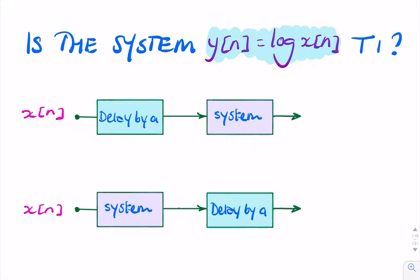So that means, if we were to delay the input, would it be the same as delaying the output? So if we were to delay x of n by a samples, we would have x of n minus a. And if that was the input to our system, what would the output be?